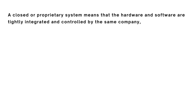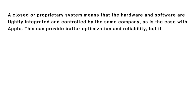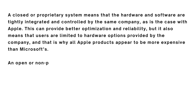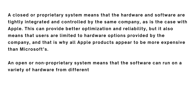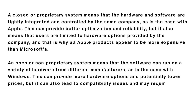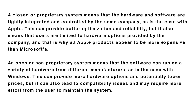A closed or proprietary system means that the hardware and software are tightly integrated and controlled by the same company, as is the case with Apple. This can provide better optimization and reliability, but it also means users are limited to hardware options provided by the company — which is why all Apple products appear to be more expensive. An open or non-proprietary system means that the software can run on a variety of hardware from different manufacturers, not only Microsoft, providing more hardware options and potentially lower prices.